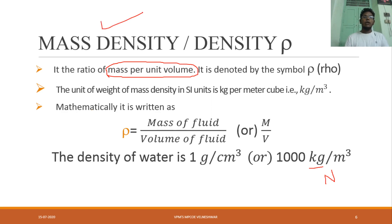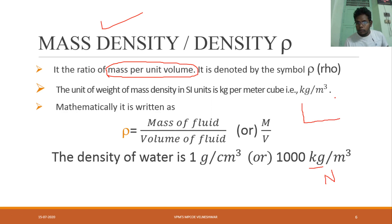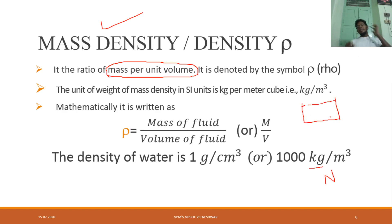First, let's understand what density is. Density is nothing but mass per volume. For example, consider a jar — the capacity of that jar is essentially its density. Think of it as how much can be held within a given space.